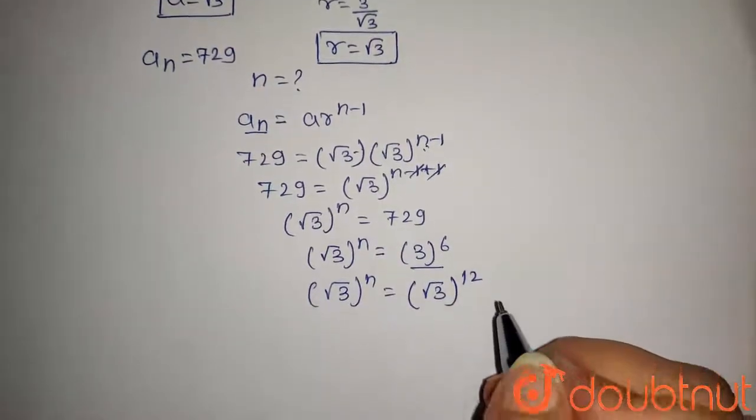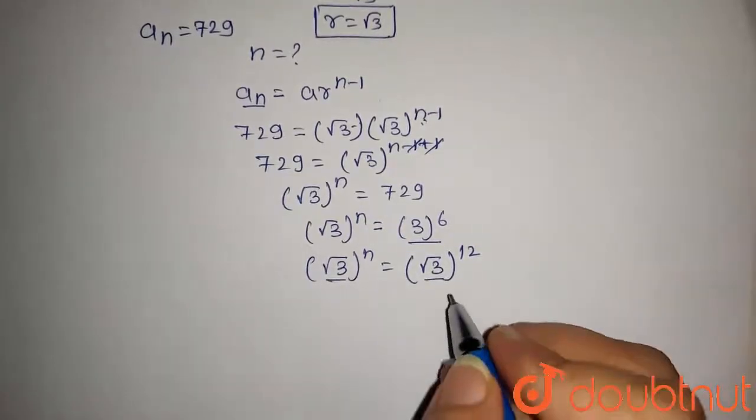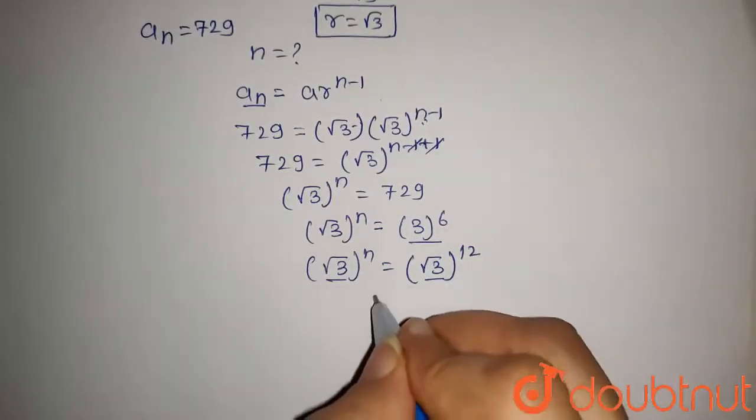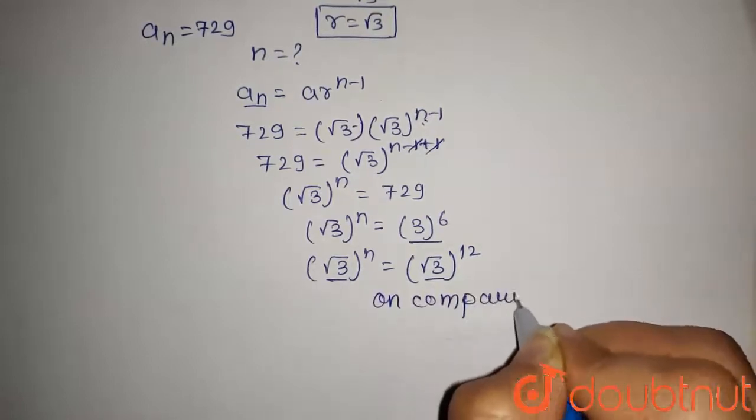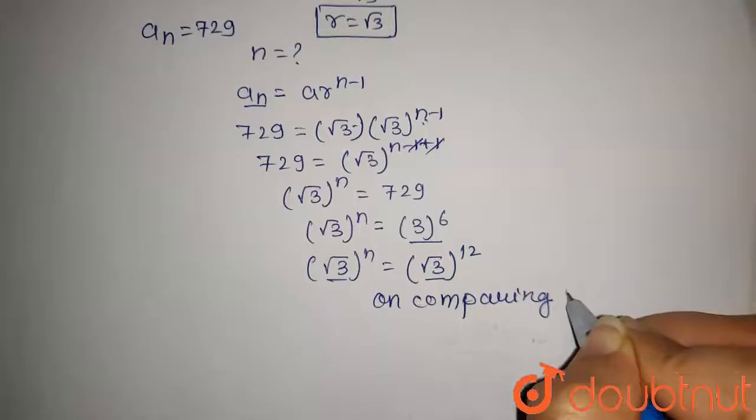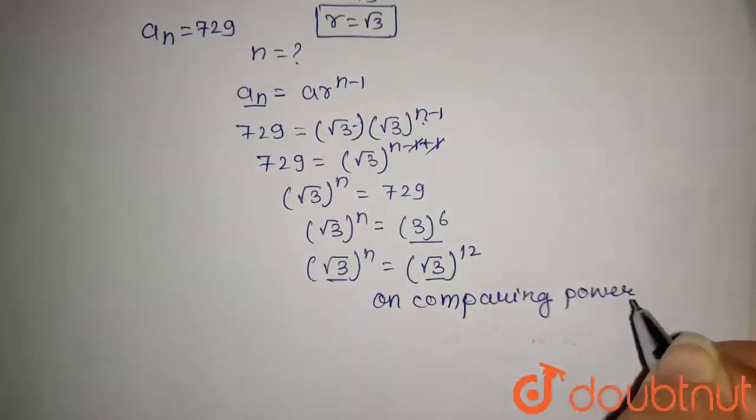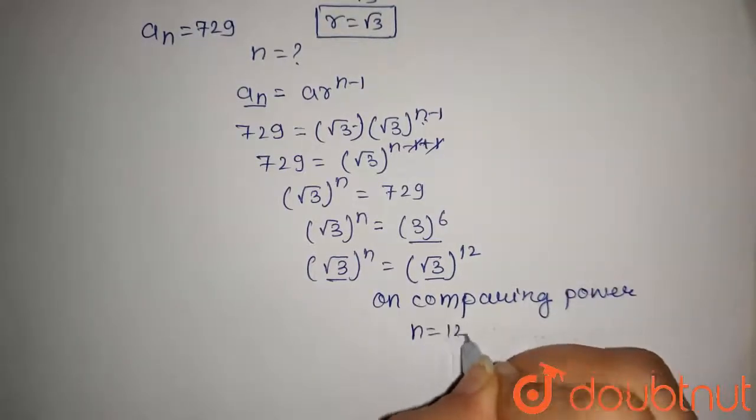As this √3 and √3 are same, on comparing the exponential powers we get n = 12.